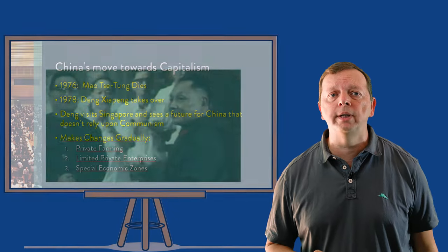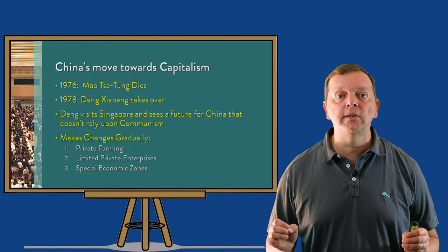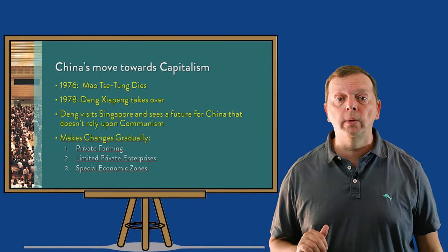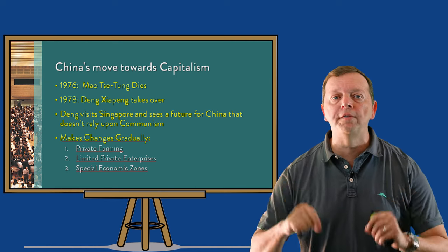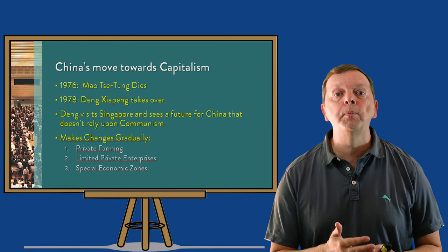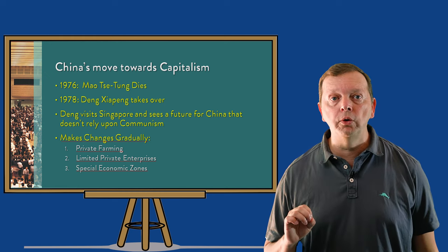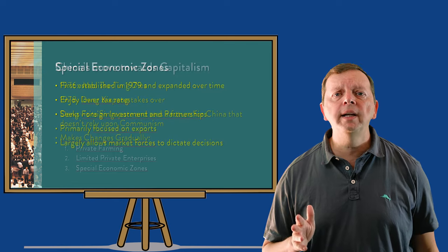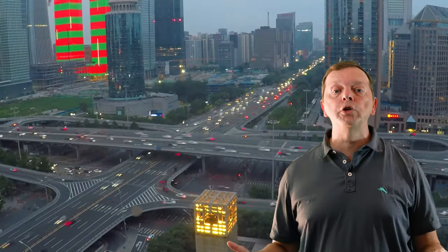Deng Xiaoping took over China in 1978, two years after Mao died. On a visit to Singapore, Deng realized that China could have the same economic success Singapore was having, but China would have to change how it did things. China would then privatize farming — farmers, not the state, would own the farms. They also started allowing private businesses to be started and established a number of special economic zones. In 1979, they established the first of these zones — essentially free market cities where the government reduced taxes, encouraged businesses to seek foreign investment and partnerships, and focused on export products to the world.